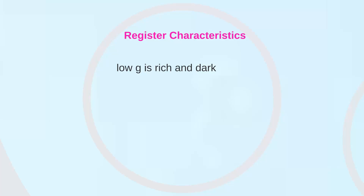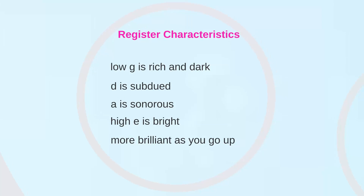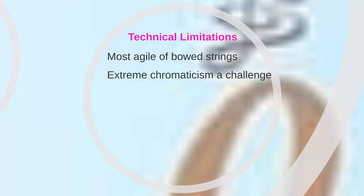The individual tone colors of the four strings make the primary distinction in sound on the violin. The low G is rich and dark, the D above that is subdued, the A above that is sonorous, and the E is bright, becoming increasingly brilliant as you go up. The violin is the most agile of the bowed string family, capable of playing nearly any melodic line, although extreme chromaticism presents a challenge. The pizzicato is quite resonant on the G and D strings, but the upper strings are much weaker in sound.